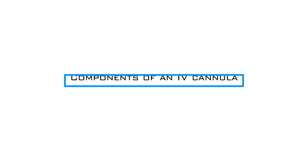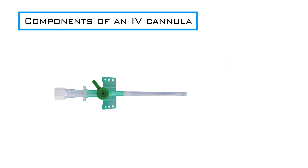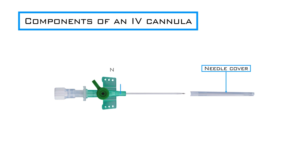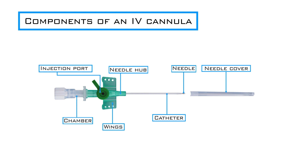Components of an IV cannula. IV cannulas typically consist of a needle cover, needle hub, needle, catheter, wings, injection port, and a chamber used to observe for a flashback of blood, which confirms that the needle has punctured the vein.